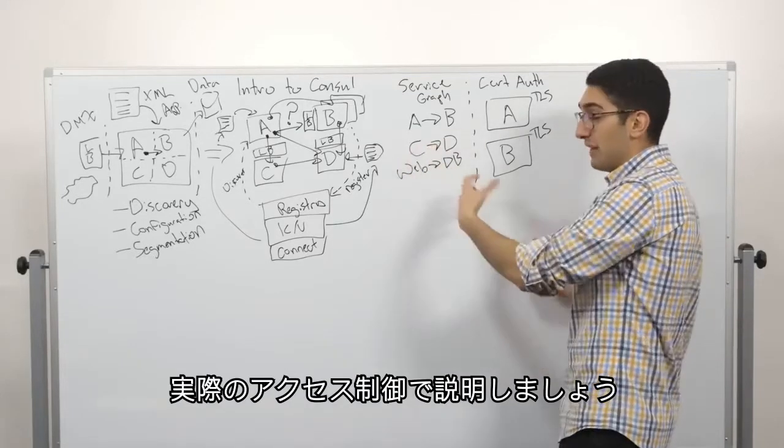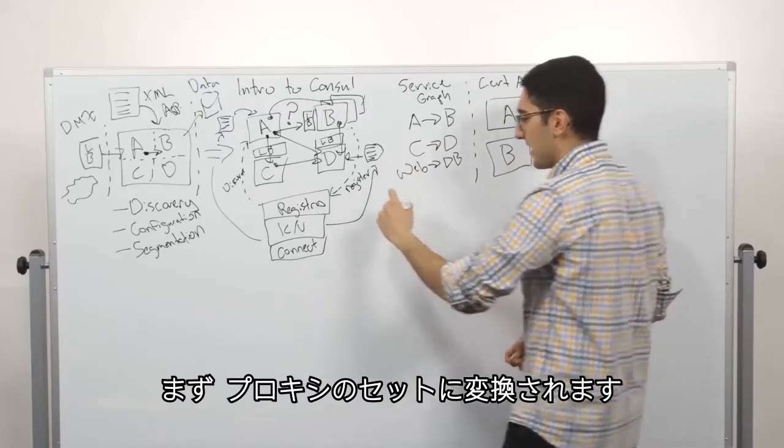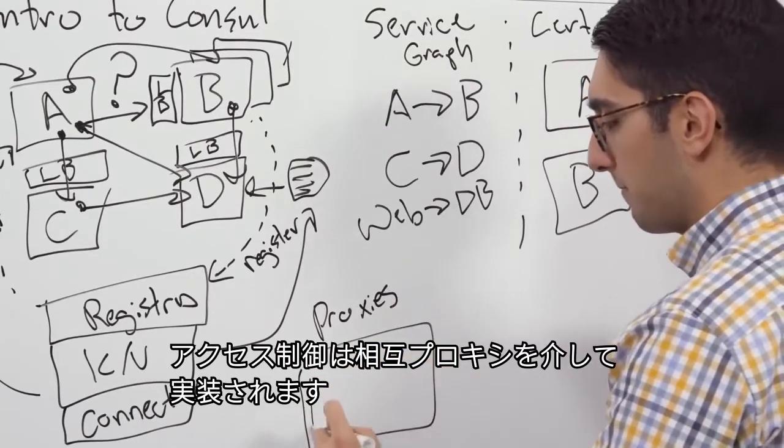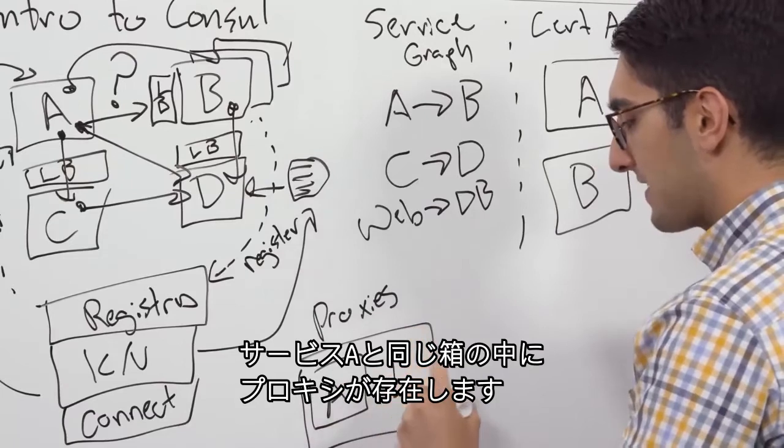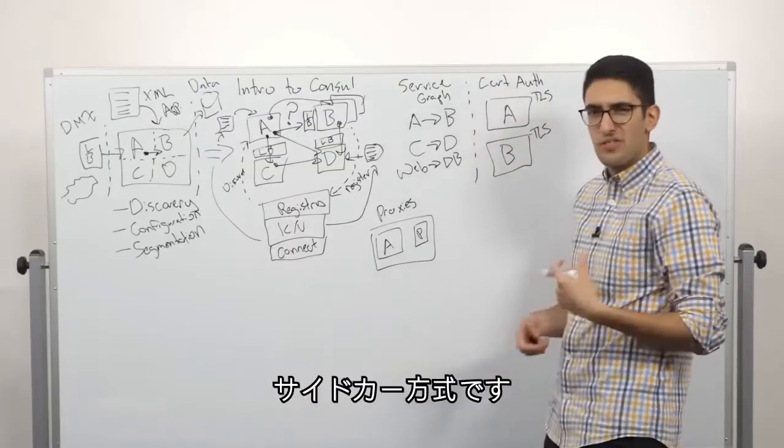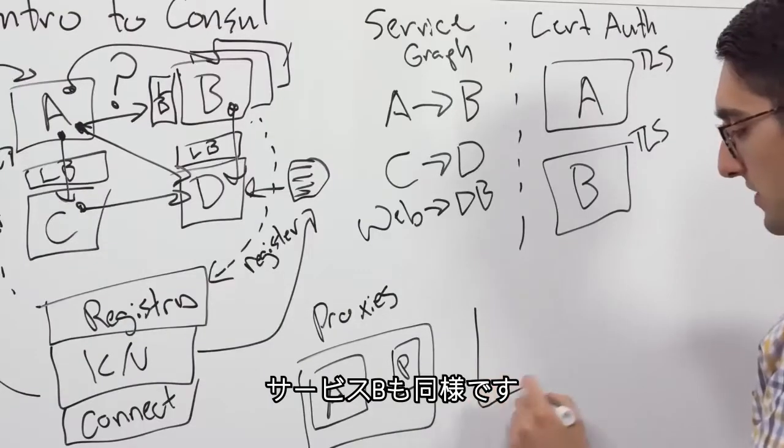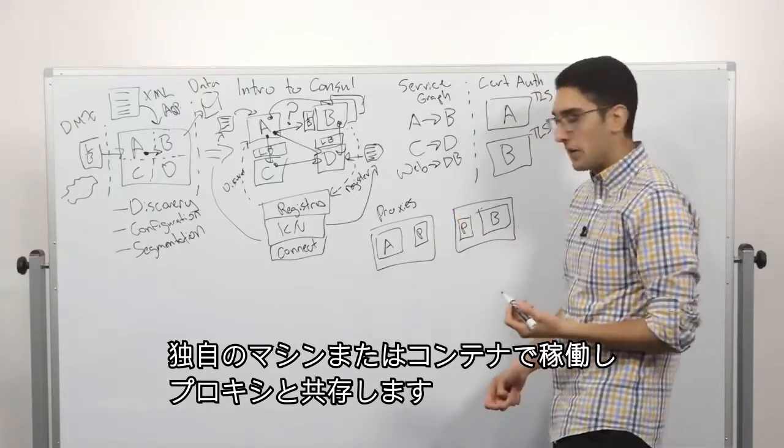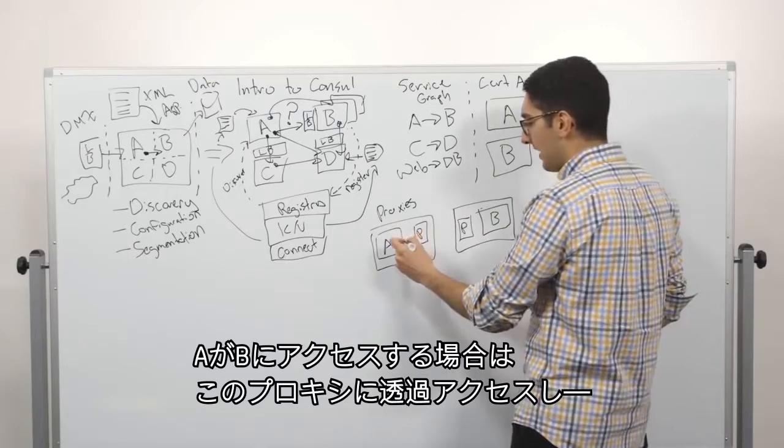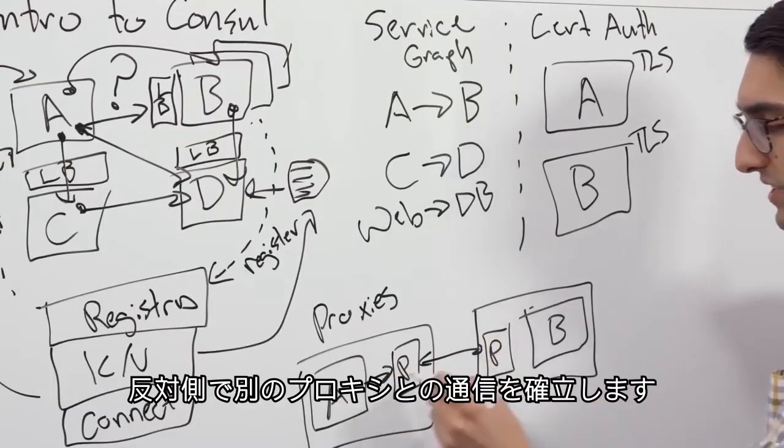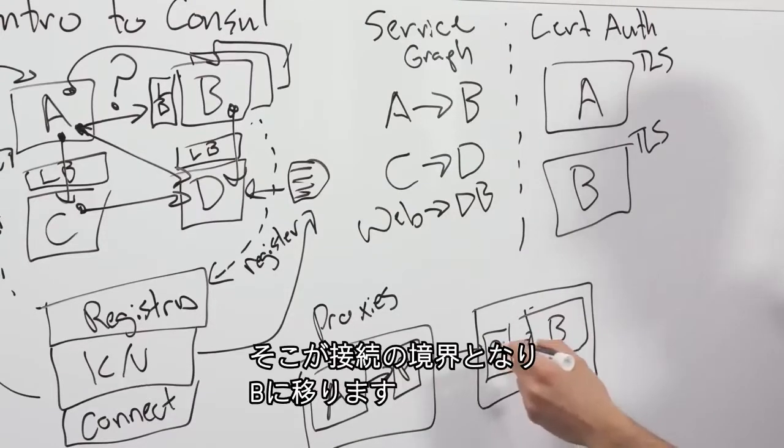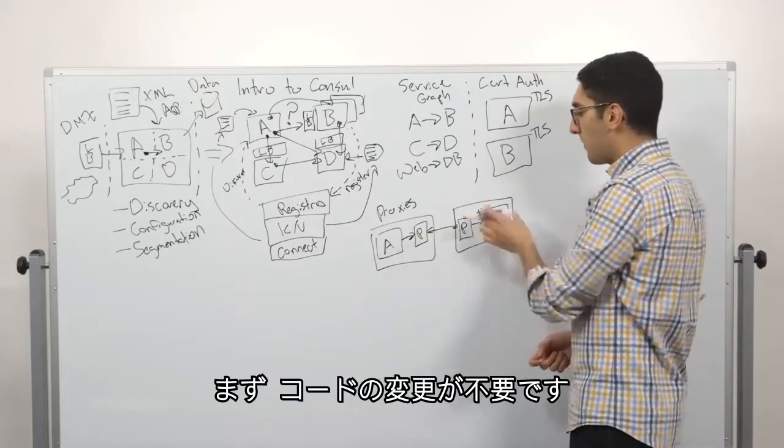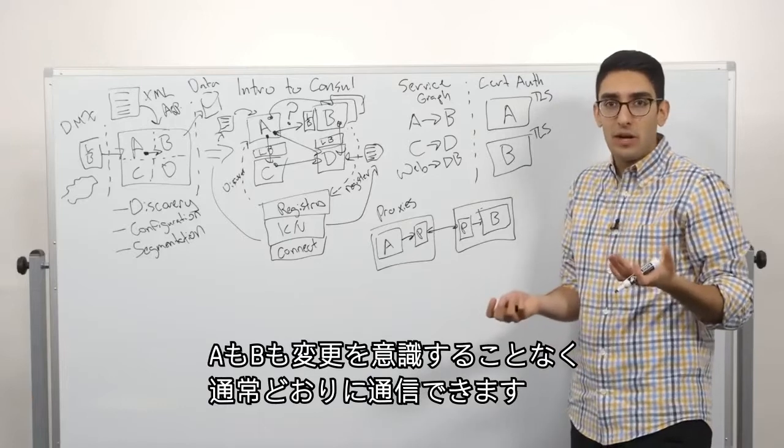Now, how do we actually enforce this? This translates then into a set of proxies. So the way we end up implementing the access control is through mutual proxying. So on a box, we might have service A. And on that same box, we're running a proxy alongside of it. So this is sort of a sidecar proxy. And then, similarly, for service B, it's running on its own machine or its own container and it also has a sidecar proxy. And now, when A wants to communicate to B, it's transparently talking to this proxy, which is establishing communication on the other side to another proxy. That side terminates the connection and hands it off to B. And so this actually has a few different advantages. First, we're not modifying the code of A and B. They're both blissfully unaware that anything has changed. They're just communicating the way they normally do.